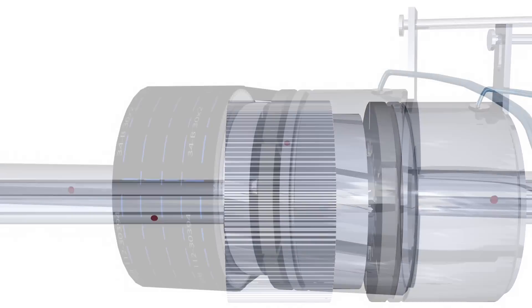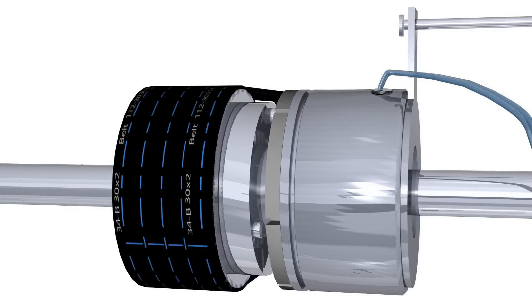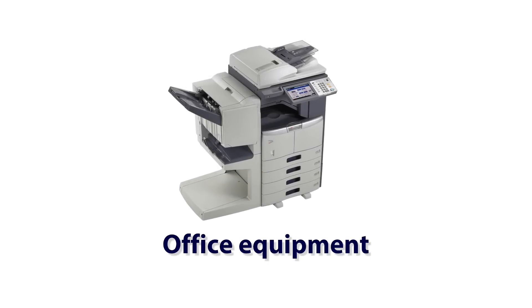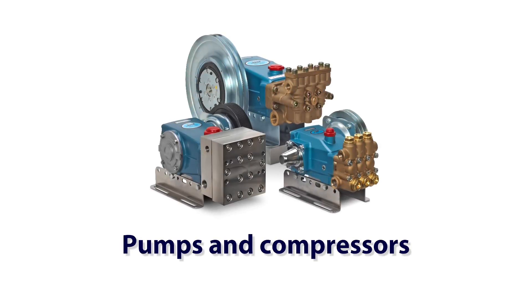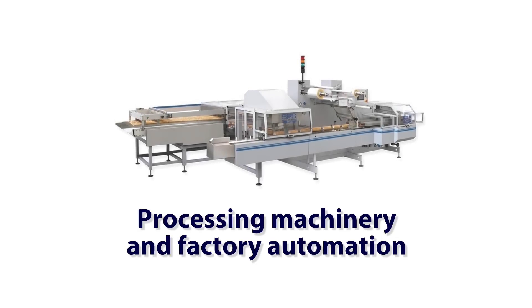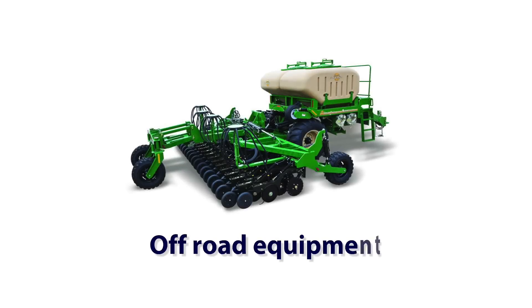Electromagnetic clutches can be found in almost any application that requires the transfer of rotary motion. Typical applications are automotive, office equipment, pumps and compressors, servo motors and robotics, outdoor power equipment, processing machinery and factory automation, medical equipment, and off-road equipment.